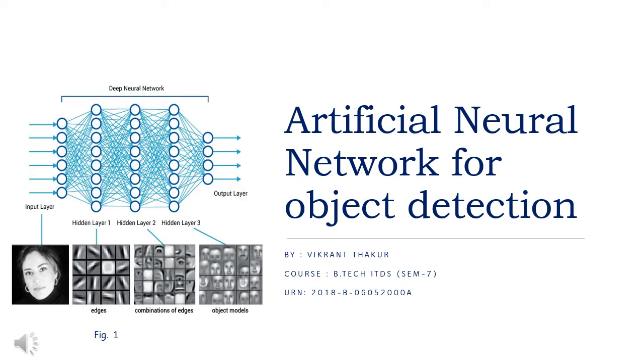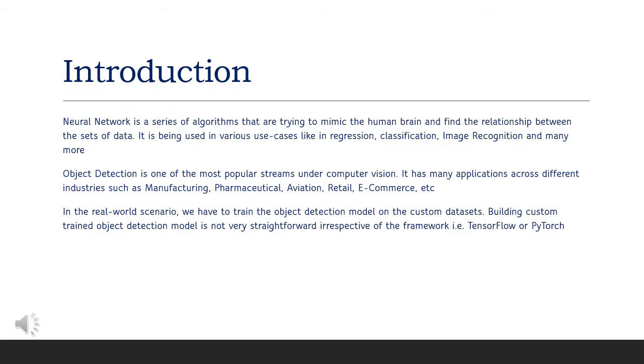So let's go to the introduction of this part. Neural network is a series of algorithms that are trying to mimic the human brain. That means neural network is highly inspired by the working of human brains. How a human classifies objects, images, and different things that it sees in its day to day life.